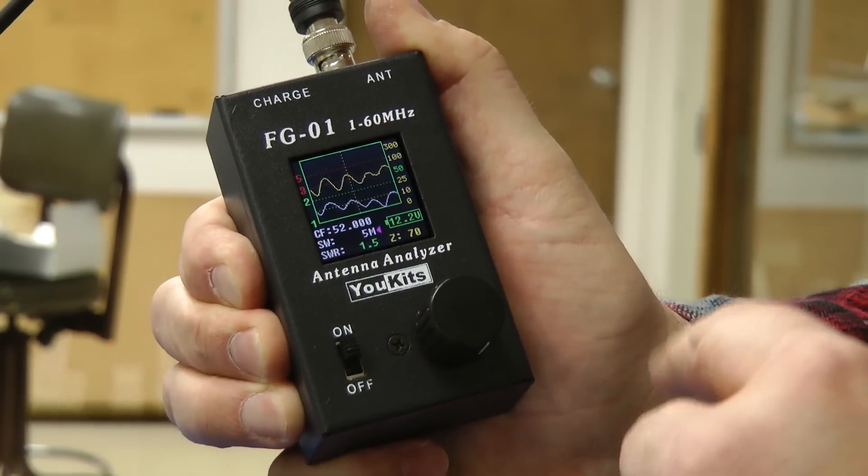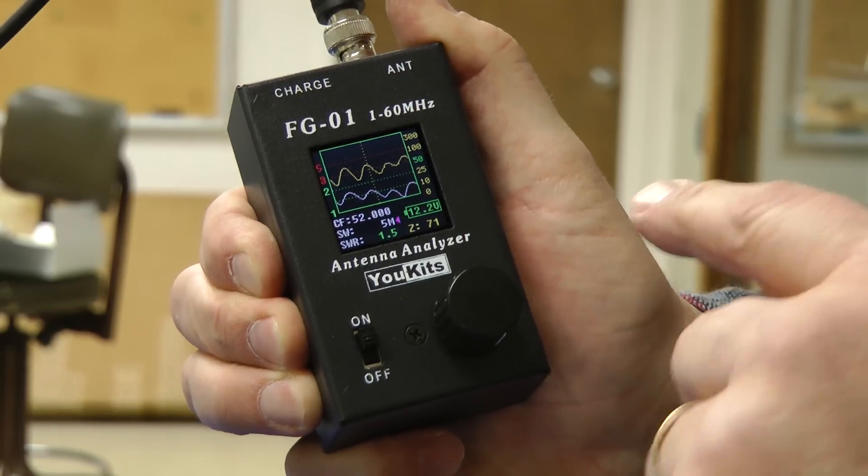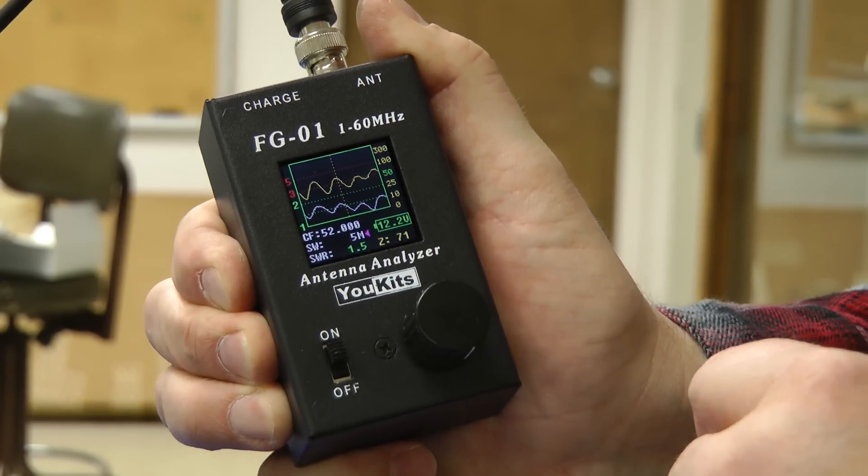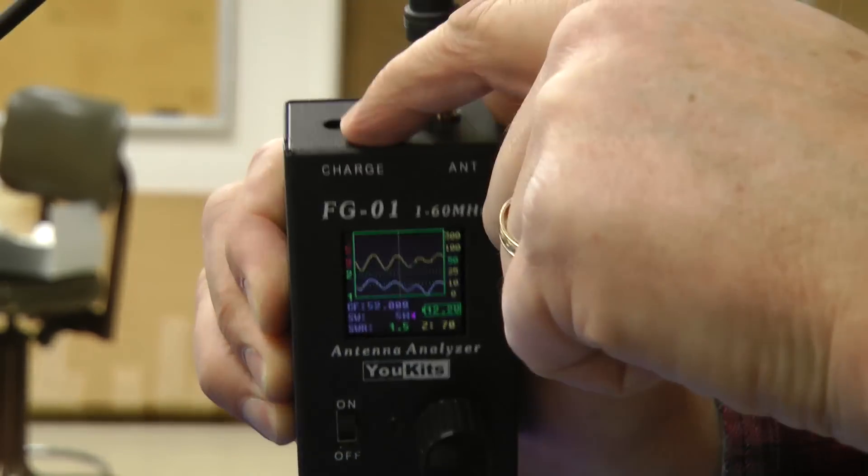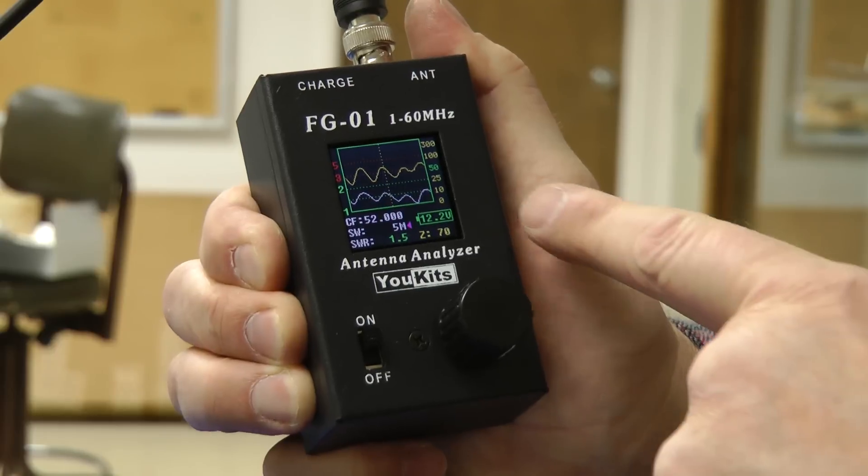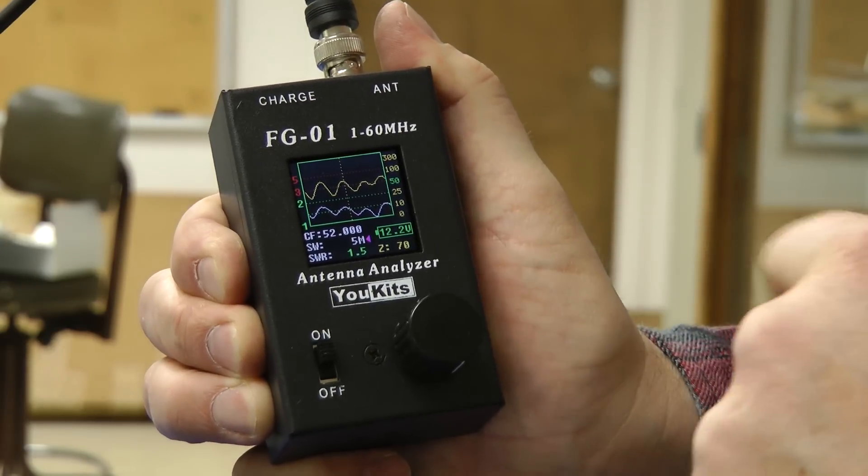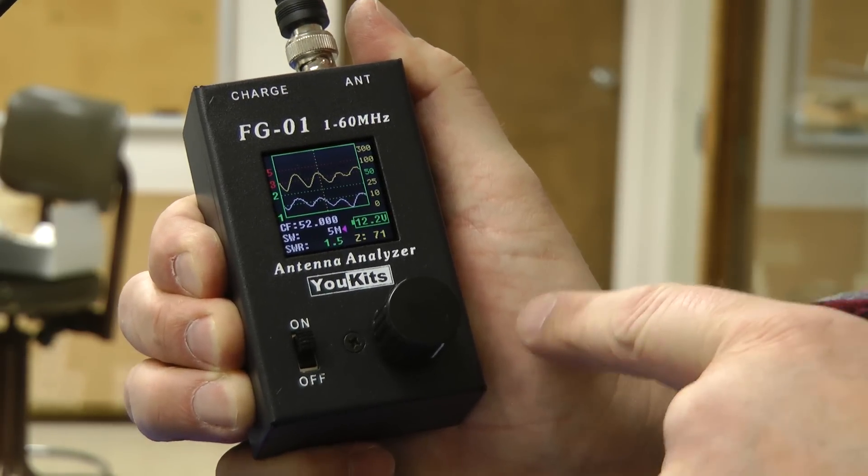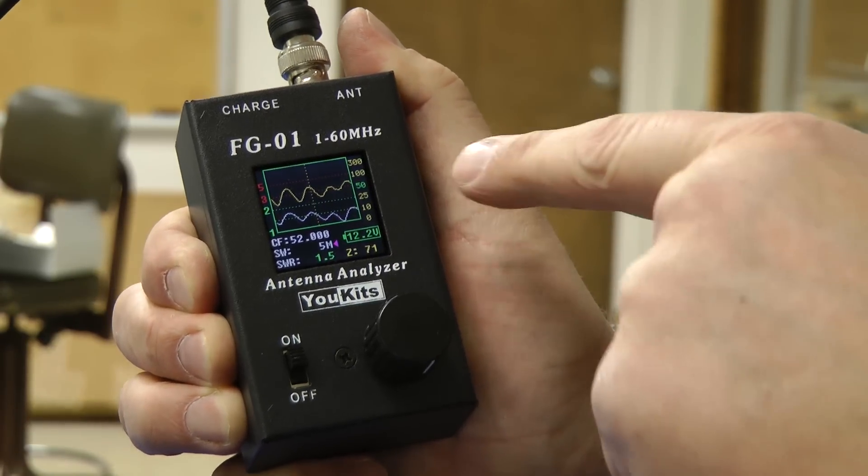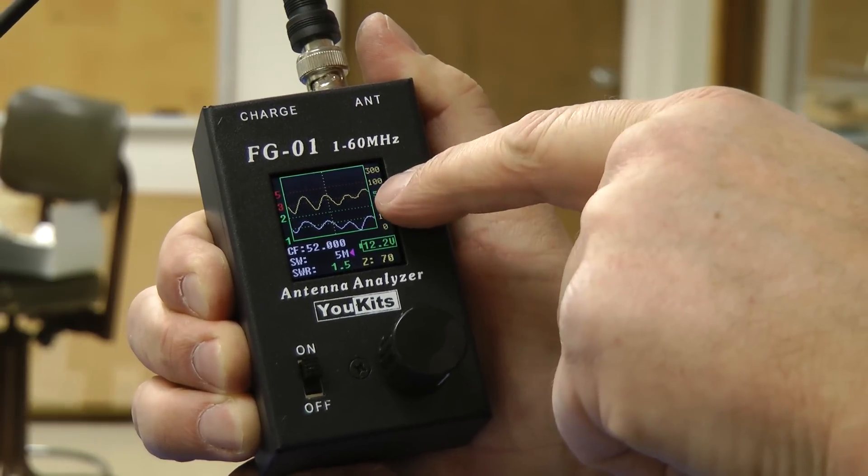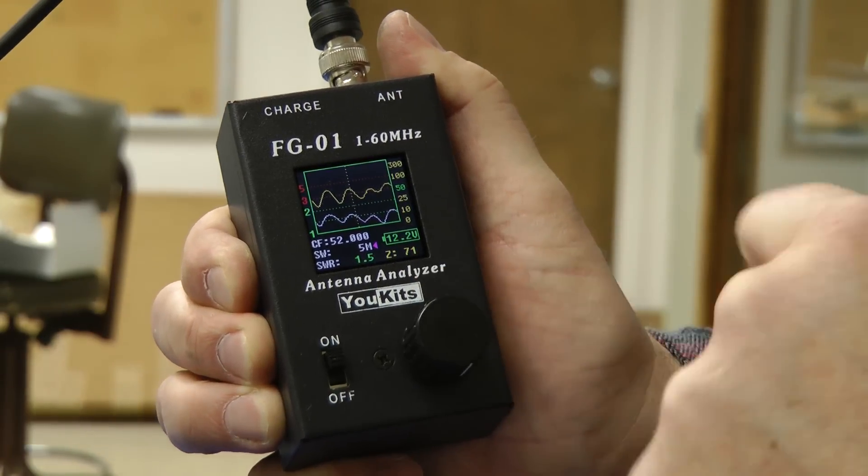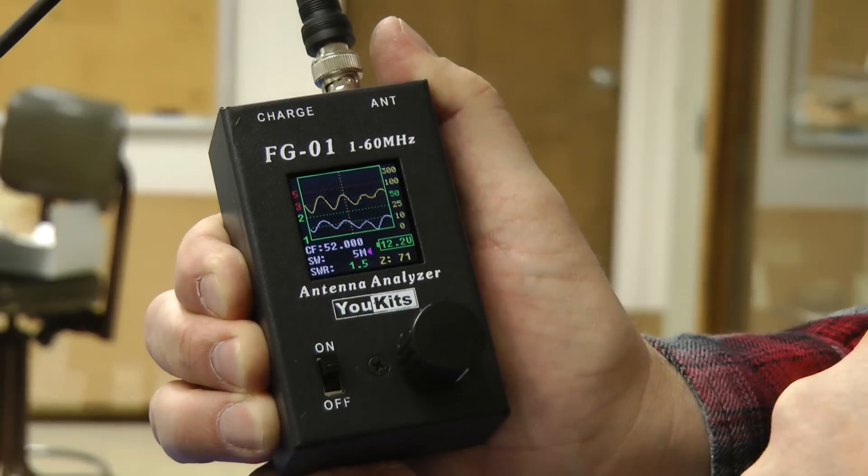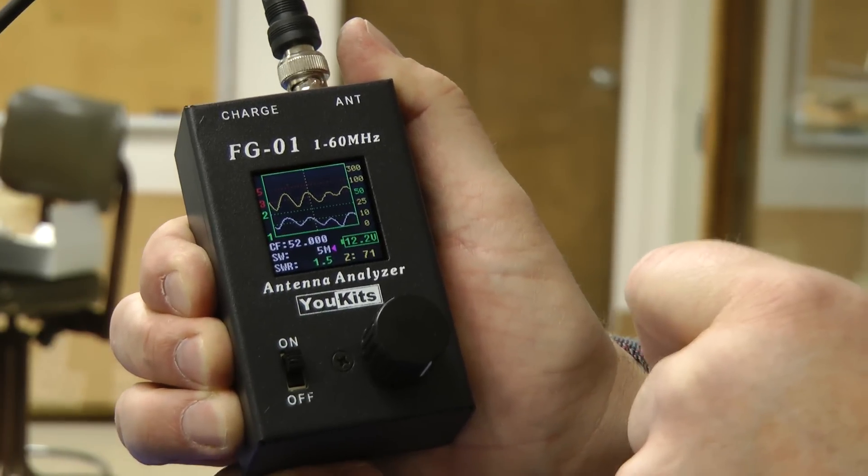This little small box is in fact an antenna analyzer. It's the UKITS FG01. Covers 1 to 60 megahertz. Has a BNC connector on the top, a little charging jack here. The display is a one inch square LCD display. We have the battery voltage 12.2 volts. We have a graph up here of impedance and the lower graph of SWR. I've chosen again 52 megahertz for the six meter antenna on the roof of headquarters building.